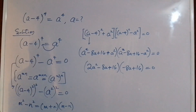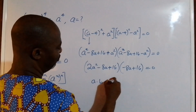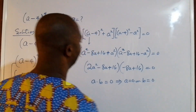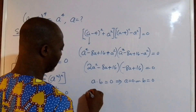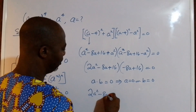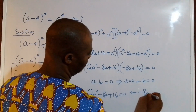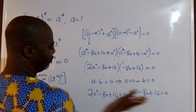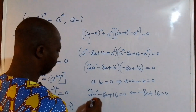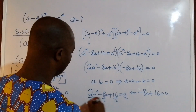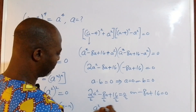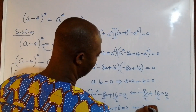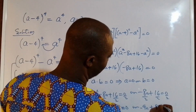So we now have a product of two factors equal to zero. If we have a times b equal to zero, this implies a equals zero or b equals zero. Applying this, we get: 2a squared minus 8a plus 16 equals zero, and minus 8a plus 16 equals zero. We can further reduce these two equations by dividing each by 2, giving us a squared minus 4a plus 8 equals zero, and minus 4a plus 8 equals zero.